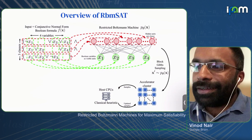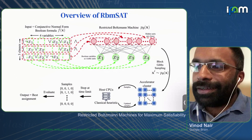We run MCMC on its own, but we also found it helpful to combine MCMC with some classical heuristics that are not friendly to implement on TPUs, so we run them on CPUs. There's an iterative process of sending samples from the TPU cluster to a CPU running the classical heuristic, then sending the updated sample back to the TPU cluster. At a time limit set by the user, we evaluate all samples produced and output the best assignment found.